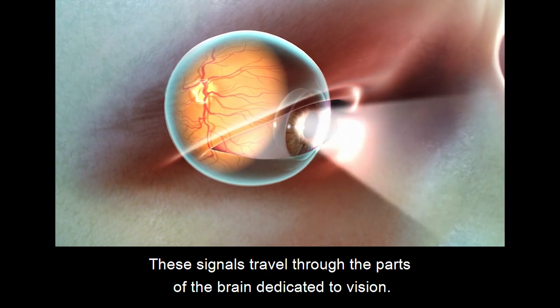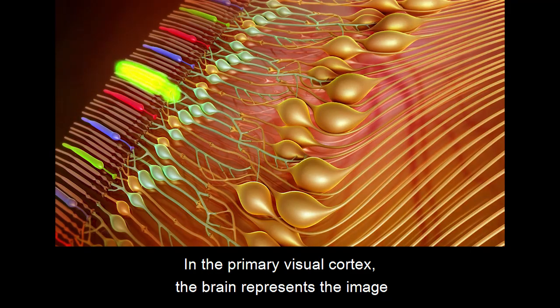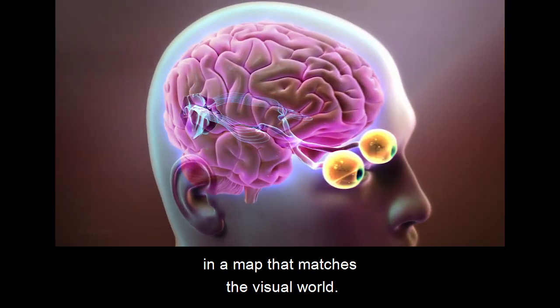These signals travel through the parts of the brain dedicated to vision. In the primary visual cortex, the brain represents the image in a map that matches the visual world.